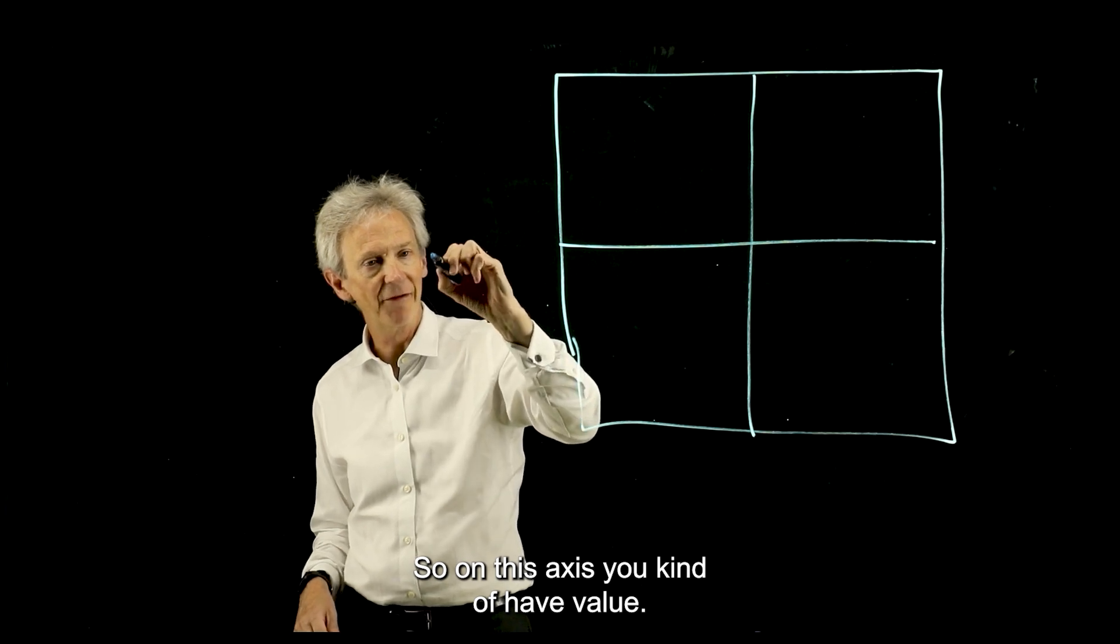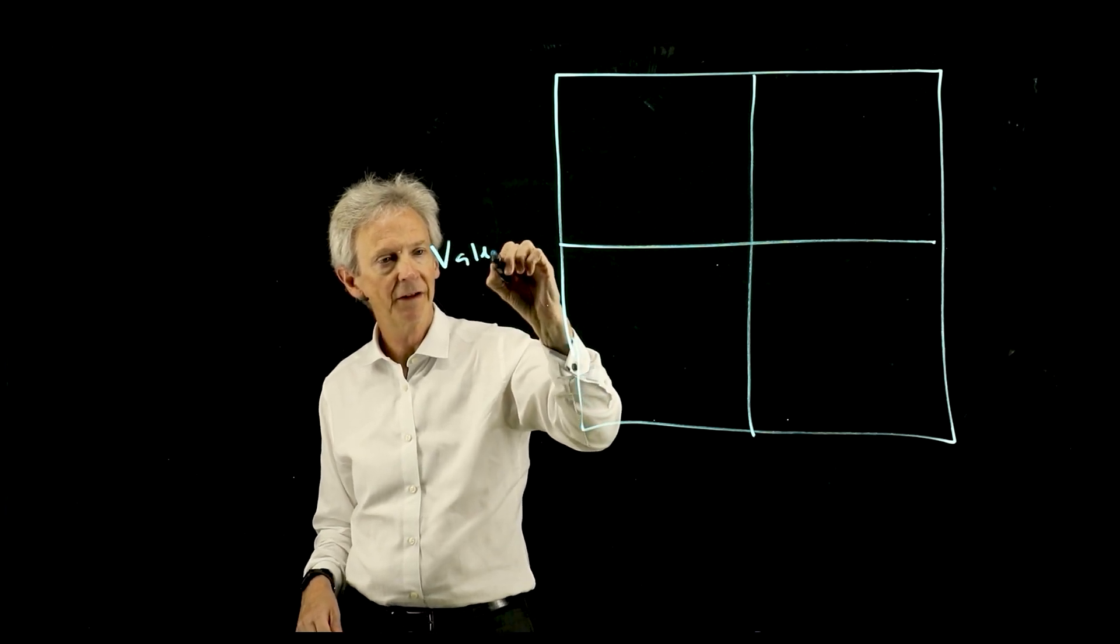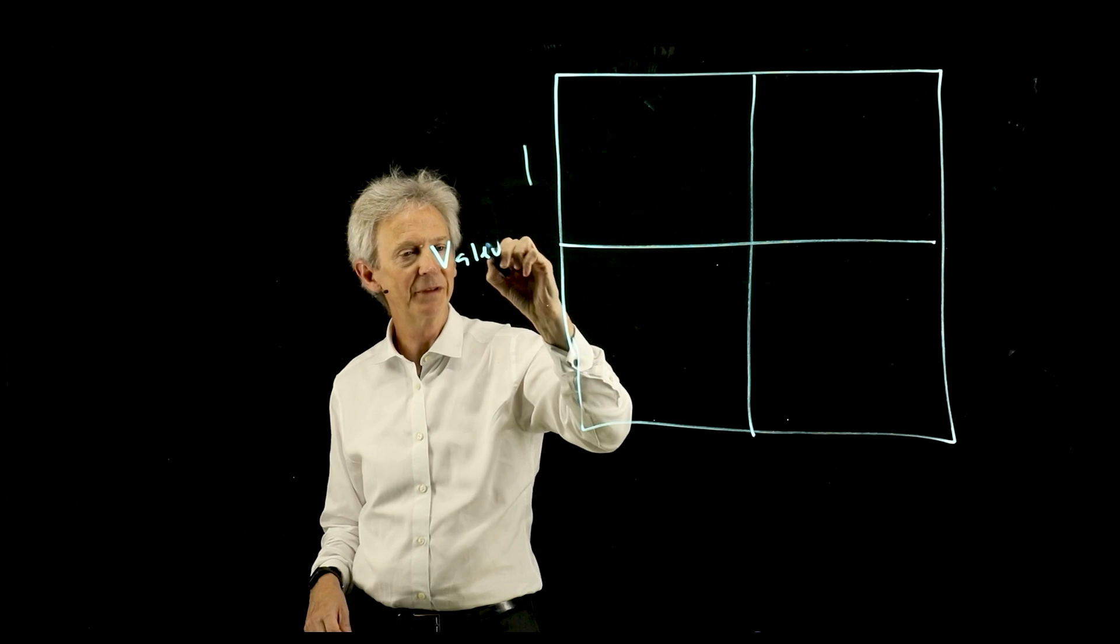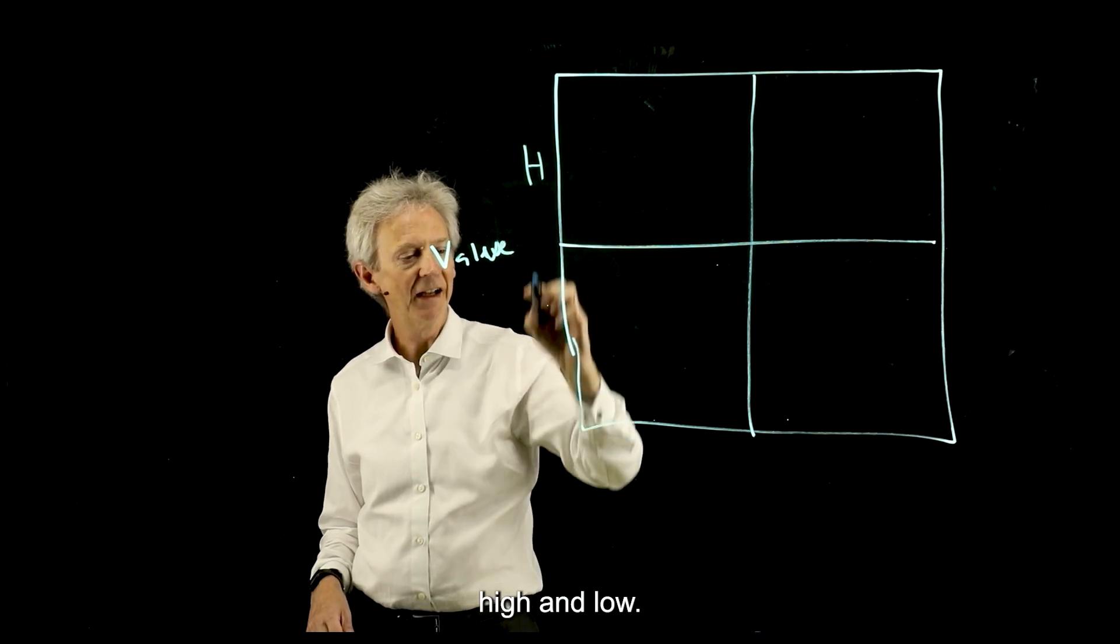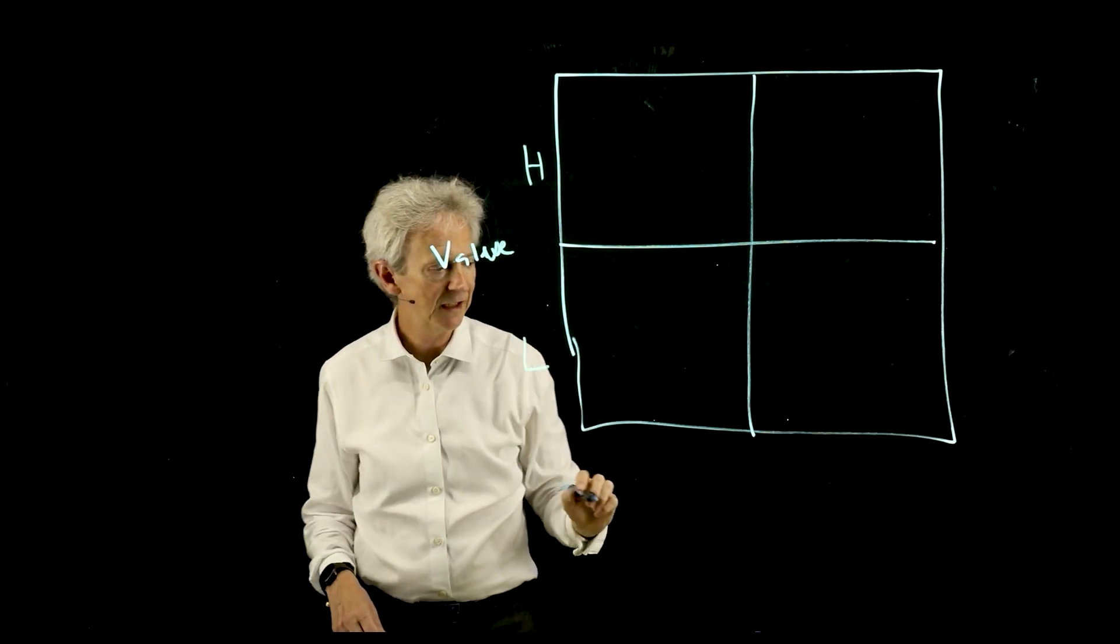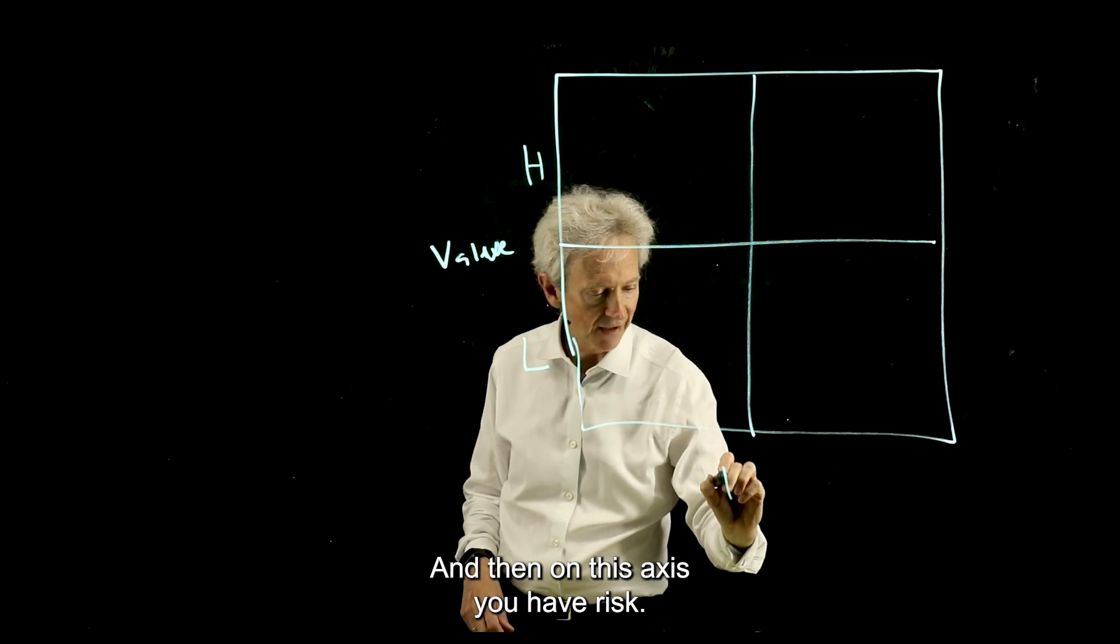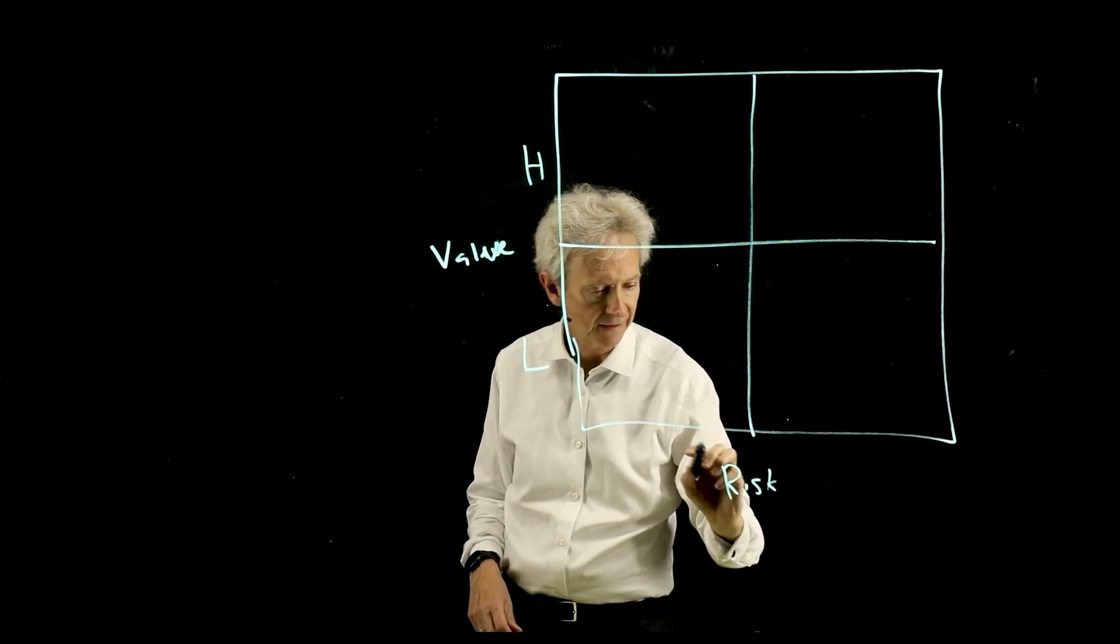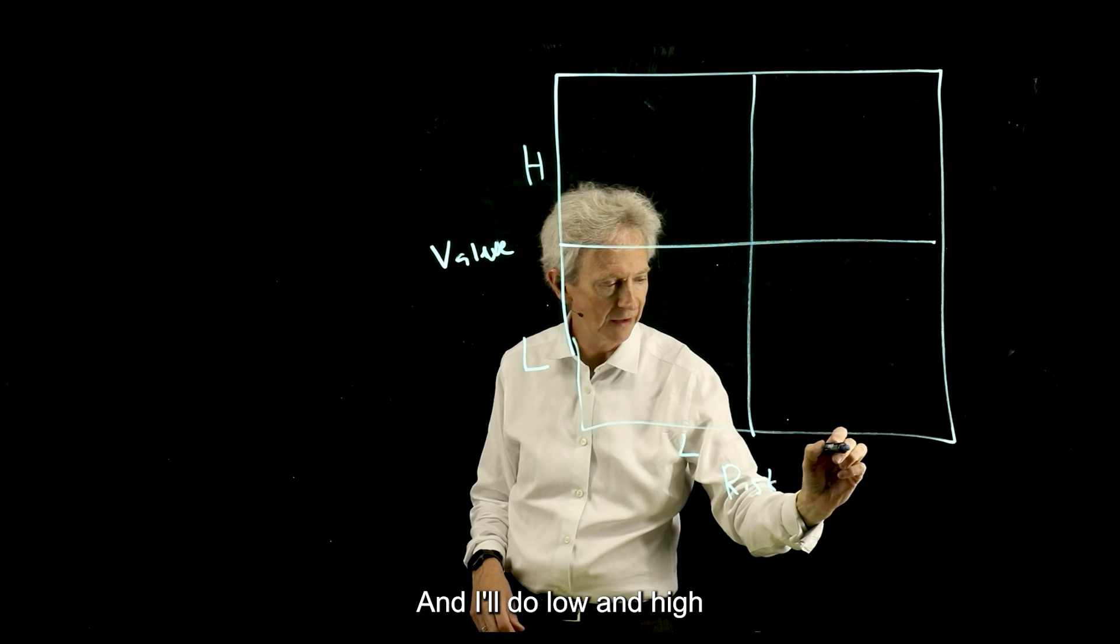On this axis, you kind of have value. This would be high and low. Then on this axis, you have risk. I'll do low and high.